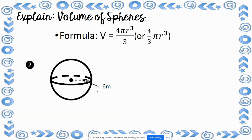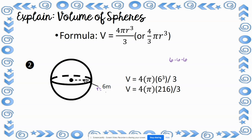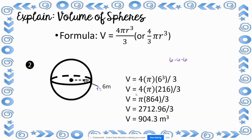For number 2, the sphere has a radius of 6 meters. Volume equals 4 times pi times 6 cubed, divided by 3. 6 cubed is 216; 216 times 4 is 864; 864 times 3.14 is 2,712.96. Divided by 3 gives a final volume of approximately 904.3 meters cubed.